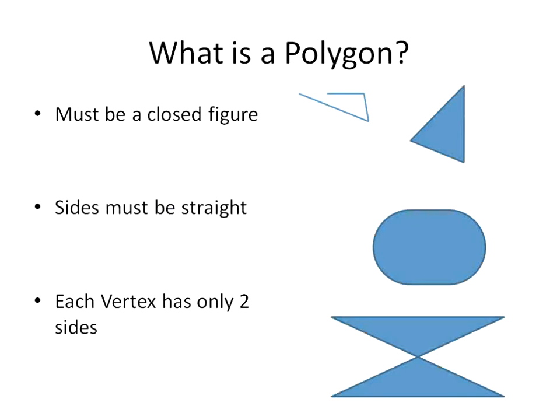So let's take a look at what is a polygon. A polygon must be a closed figure, the sides must be straight, and each vertex has only two sides connecting to it. So looking at these four shapes, can we classify which ones are polygons and which ones are not?